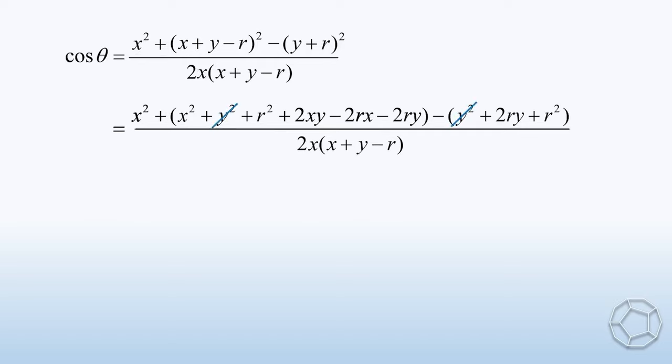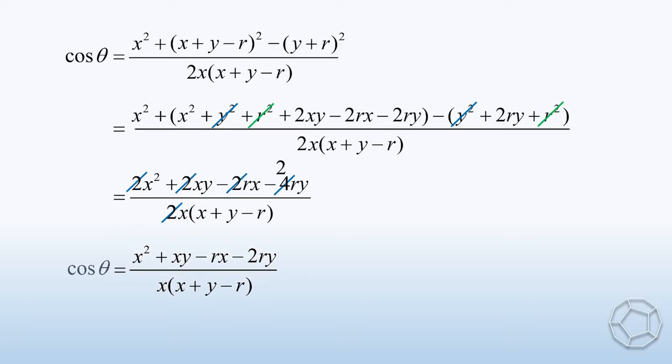Crossing out the Y² terms and R² terms, the numerator looks much simpler. Then, we have (2X² + 2XY - 2RX - 4RY) / 2X(X + Y - R). At this point, we can cancel out the factor two. Then, this is a simple expression of cosine theta. Let's call this equation 1.